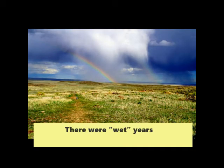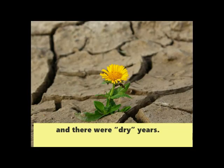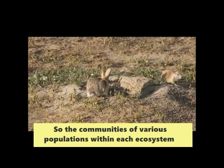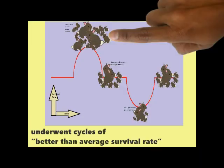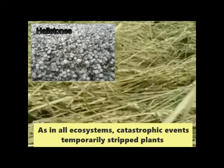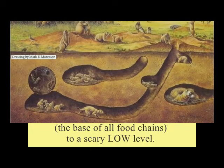There were wet years and there were dry years. So the communities of various populations within each ecosystem underwent cycles of better-than-average and worse-than-average survival rates. As in all ecosystems, catastrophic events temporarily stripped plants — the base of all food chains — to a scary low level.